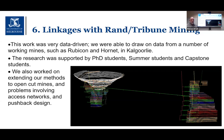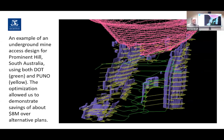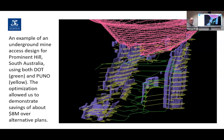Here is an example of work done for Prominent Hill in South Australia, showing the use of two of our main tools — both DOT and UNO. DOT is shown doing the backbone networks in green, and UNO shows the level developments on each level. This project demonstrated savings of more than eight million dollars over alternative plans that had been suggested for that mine, which was a really good way of showing the usefulness of the tools we were developing.